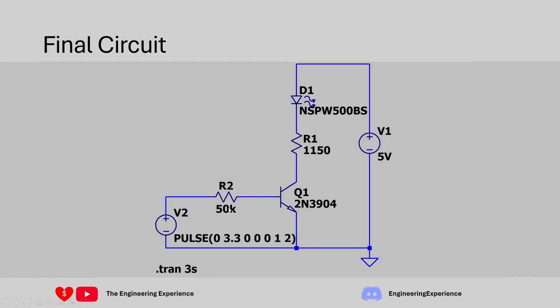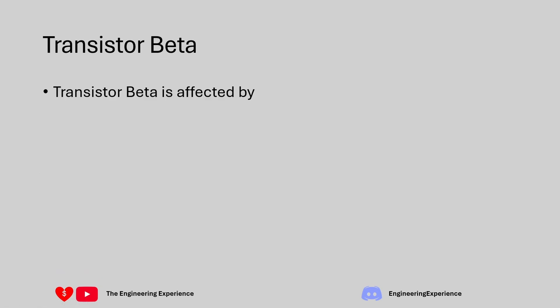So the final circuit has a 50 kilo ohm resistor at the base and a 1,150 ohm resistor at the collector. Find the closest available values - using E24 or E96 series, for example. One important note: the transistor beta cannot be relied on precisely for circuits like this, because a large number of factors affect it.